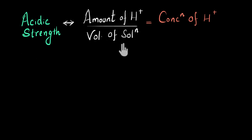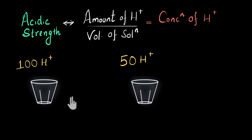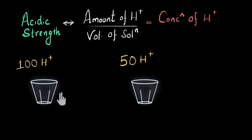You don't have to worry about the ratio formula right now — we will talk about that in a separate video. For now, let's take another example. Here I have two glasses of water with the same volume. I've dissolved 100 H+ ions in the first one and 50 H+ ions in the second one. Since both solutions have the same volume but the first one has more H+ ions, it is the more concentrated solution — it has a higher concentration of H+ ions — and that's why it is more acidic.